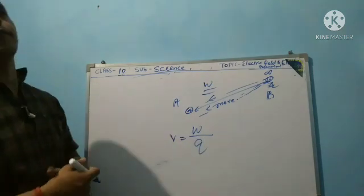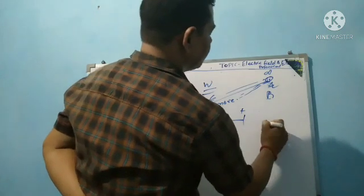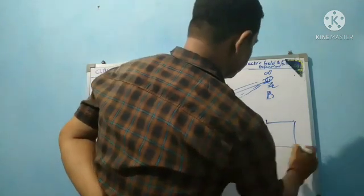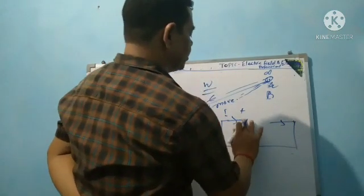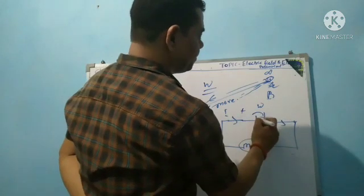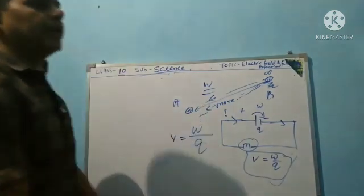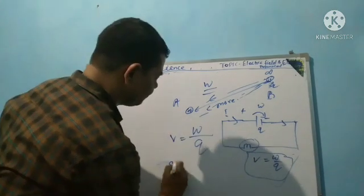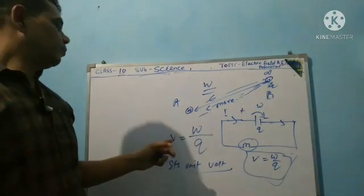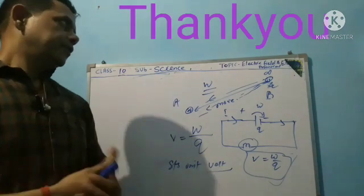Electric potential difference V is equal to W by q — work done divided by charge. Some places have positive and negative terminals, such as a circuit with a cell and bulb, and the work done to carry charge from one point to another gives the potential difference. Its SI unit is Volt. So V equals W by q — that is electric potential difference. Today's topic ends. Thank you.